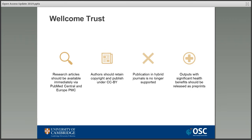The Wellcome Trust have made slightly more progress with their review and therefore there's something concrete to report. The Trust funds a lot of research projects both in Cambridge and the wider world and is a really major player in the research landscape. They're also one of the first to align their open access policies with Plan S, and they've introduced changes which will come into effect from the 1st of January 2021. After this date, all research articles funded by the Wellcome Trust will be bound by the new policy, but monographs and book chapters will continue under the old policy.